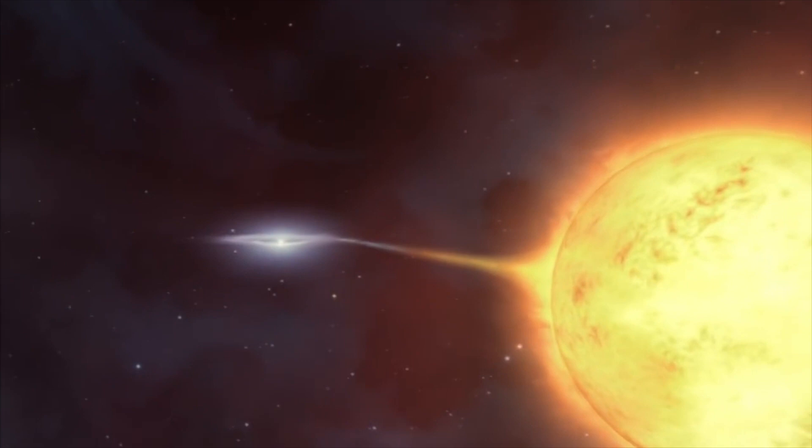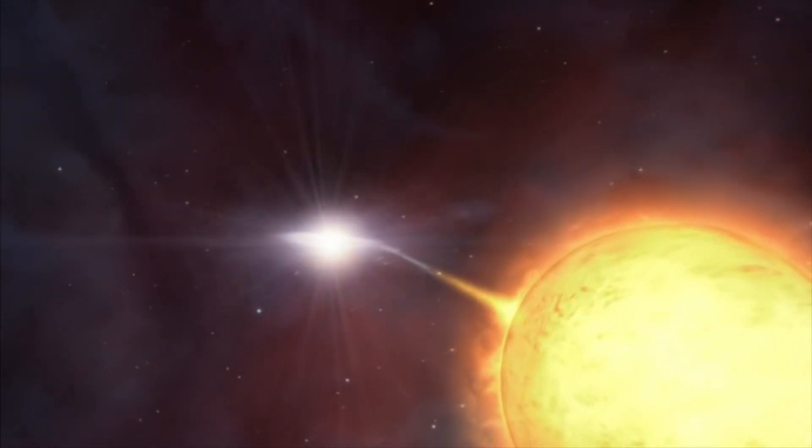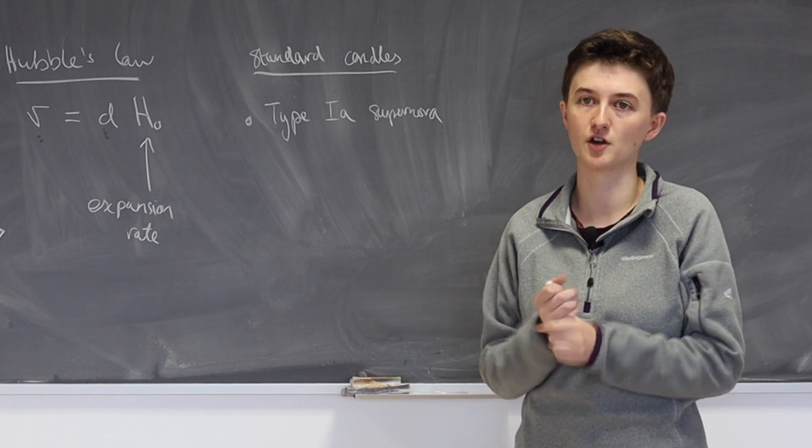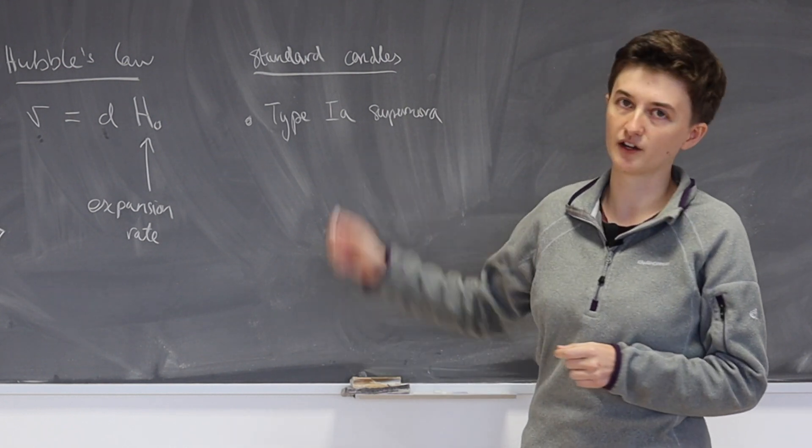But for a type 1a supernova, this is the particular formation mechanism they have, this explosion always occurs at the same mass. And this is key, because if it occurs with the same mass, it will have the same brightness every time it explodes, no matter where they are in the universe.